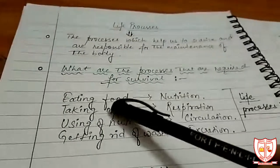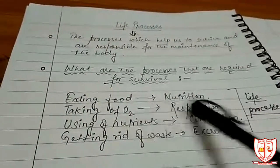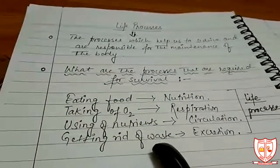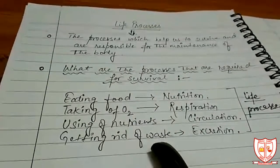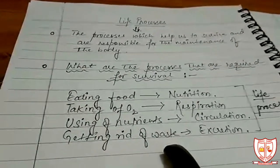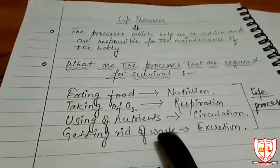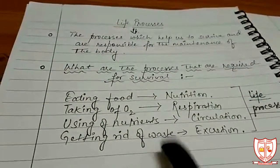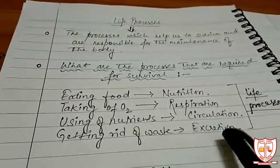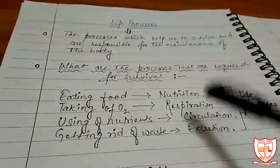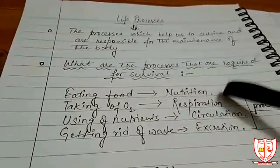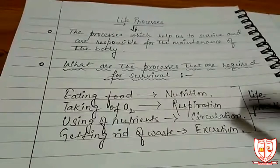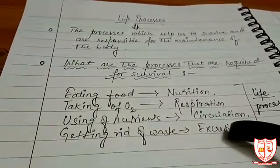Finally, after taking the nutrients, using the oxygen, and circulating it throughout the entire body, we are left with unwanted things in our body, which are known as waste. We need to get rid of this waste — that means we throw it out from our body — and this process is known as excretion. So it is quite clear that nutrition, respiration, circulation, and excretion are the processes on which our body's maintenance is dependent.